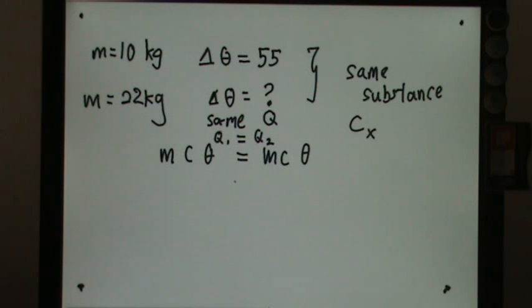In the question, it says that the same amount of heat is supplied for situation one. If M is 10 kg, the temperature rise is 55. So now they ask, what if I use 22 kg? So how much will be the temperature rise if I use the same amount of heat? So Q1 equals to Q2.